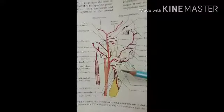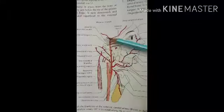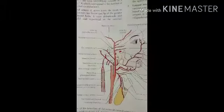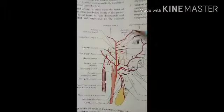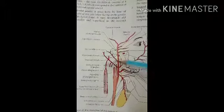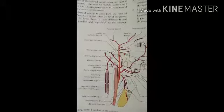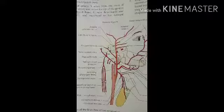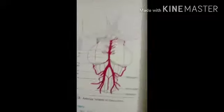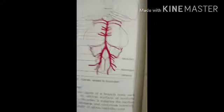Before starting the circle of Willis, here in this diagram you can see the different branches of the external carotid artery supplying the head, neck and facial region — the common carotid artery dividing into the external carotid and internal carotid. Now let's see the circle of Willis, also called the circulus arteriosus.